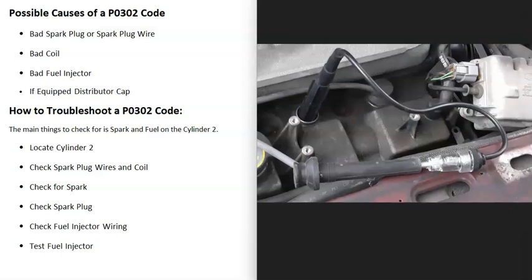A quick way to rule out any spark problem is to check if you're getting spark. One method is using a spark tester tool. The way these work is one side goes on the spark plug and the other side goes to the coil. Then you start the engine and if you're getting spark, you'll see it inside. These are low-cost tools, usually less than $10-15.